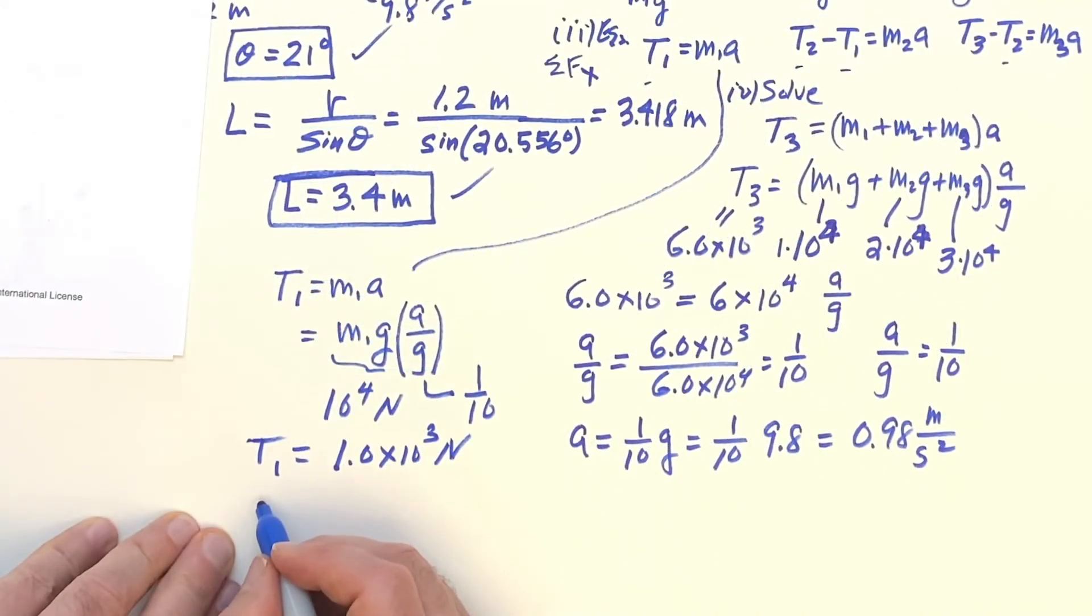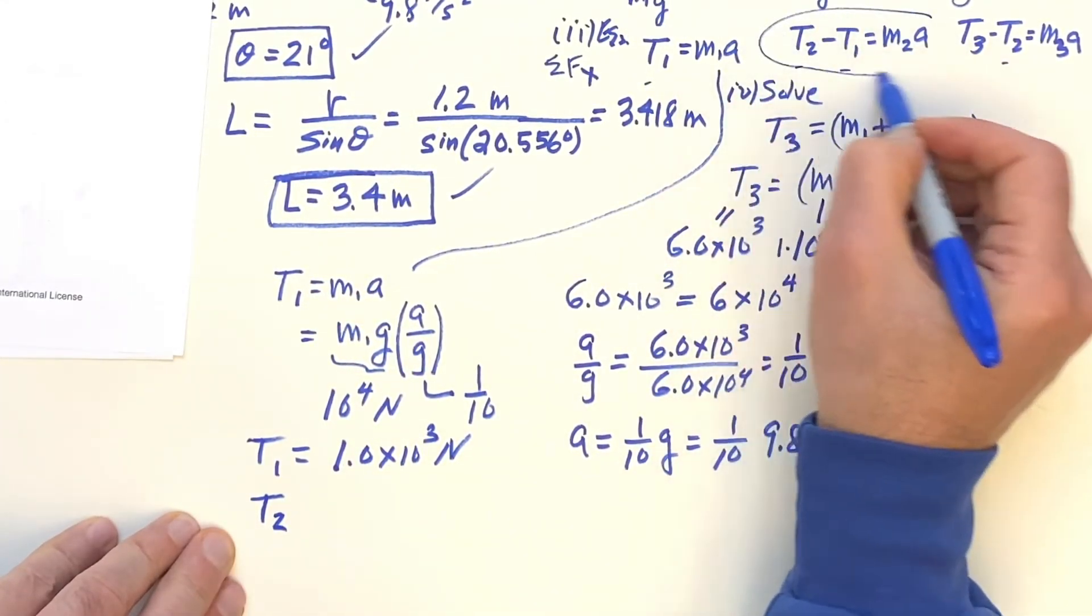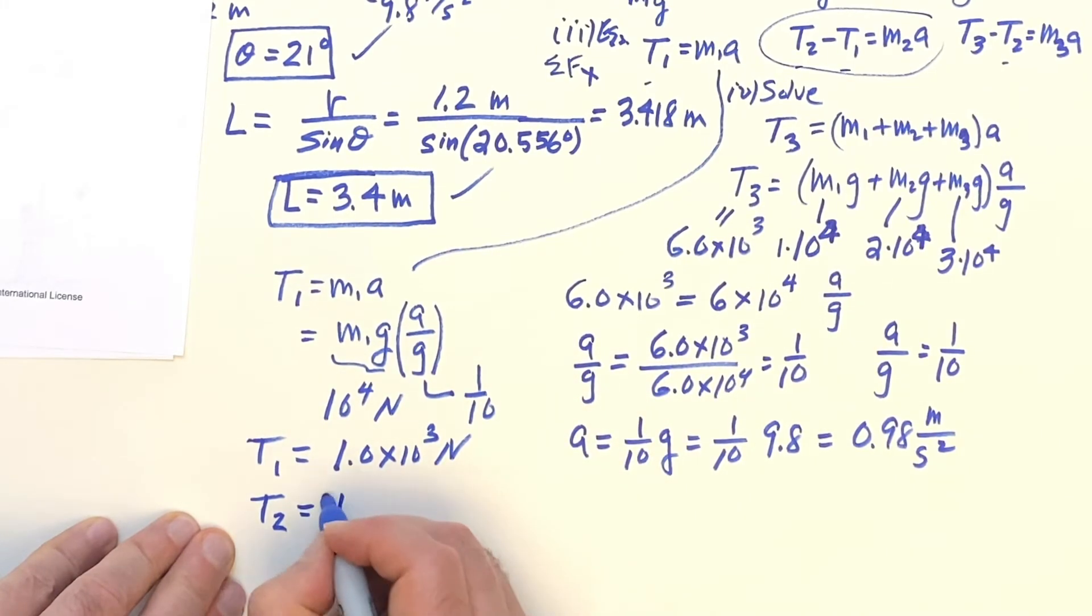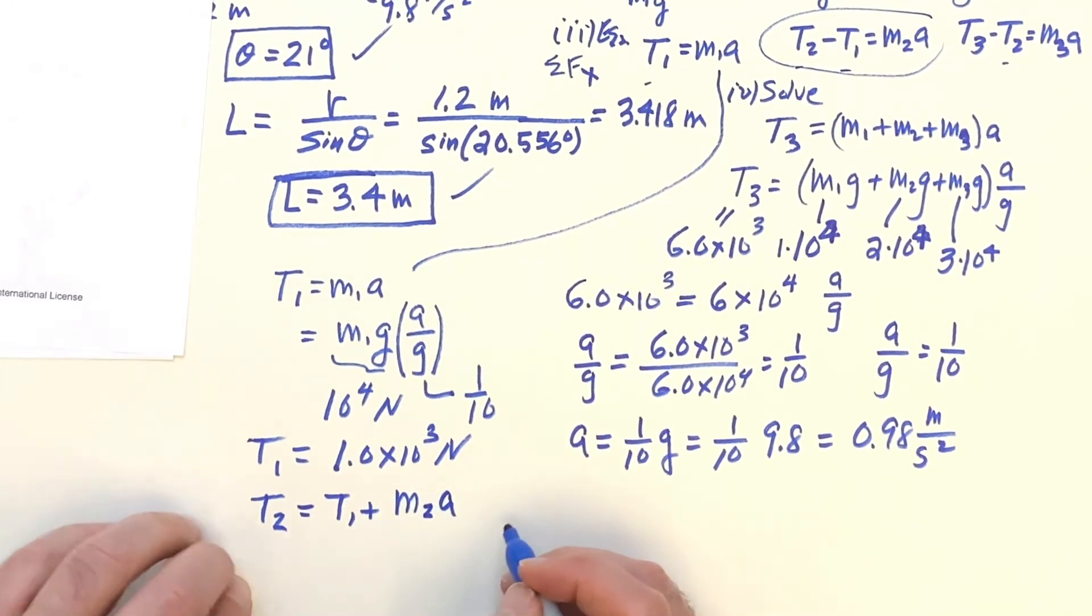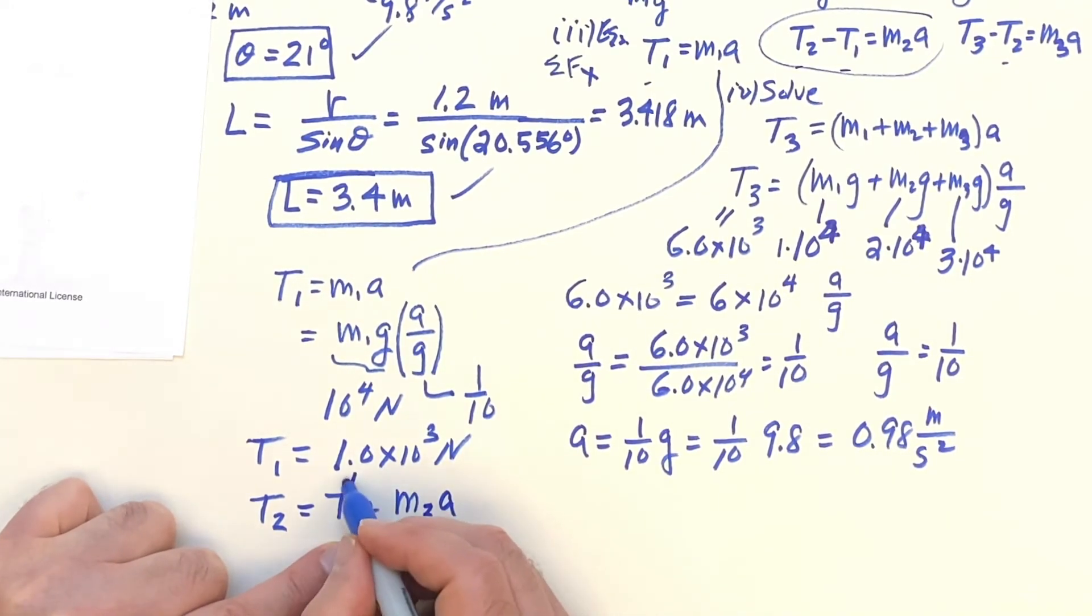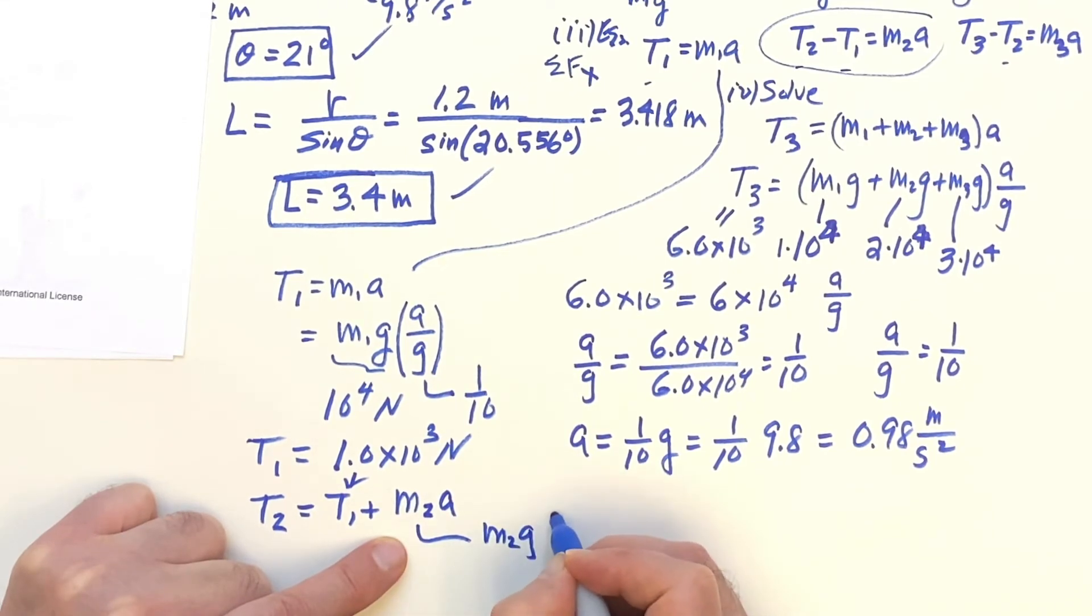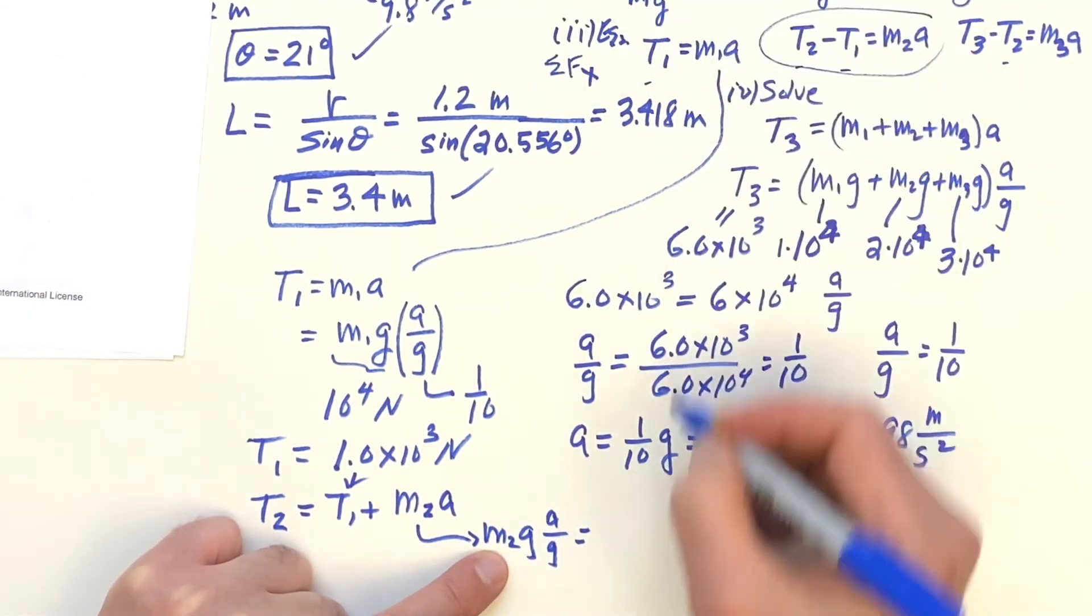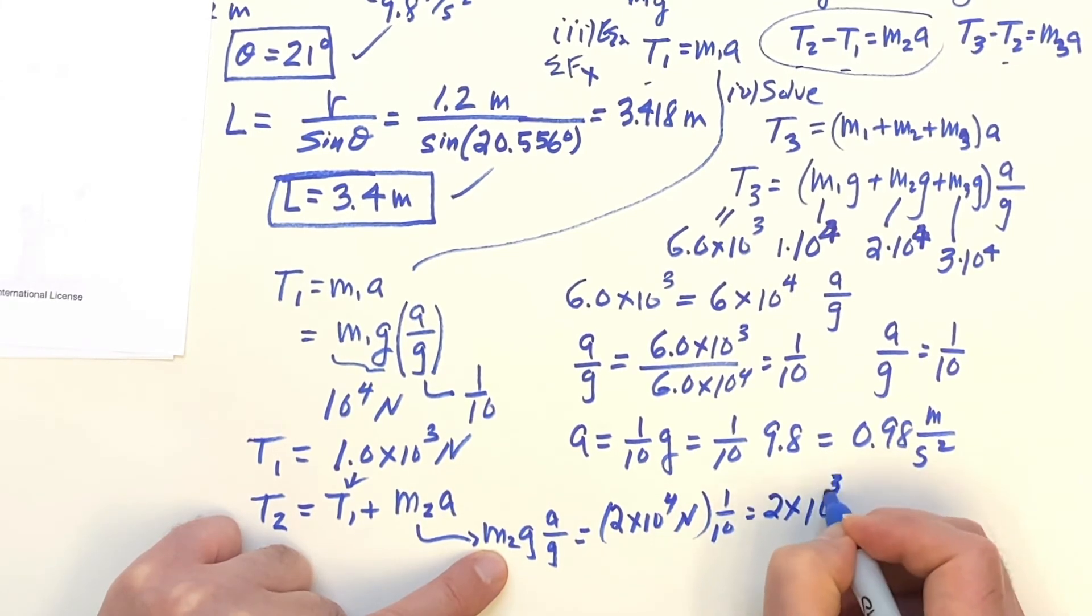And then for the second one, I use this equation here. This is going to be T1 plus M2A. That goes in there. And then using the same trick here, M2G times A over G. This little piece here is 2 times 10 to the fourth Newtons times 1 tenth, which is 2 times 10 to the third Newtons. And when I add that to the 1...